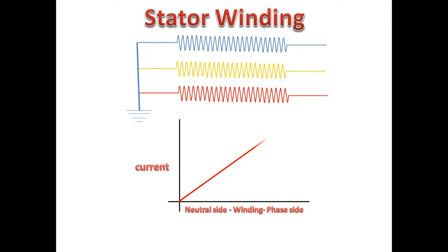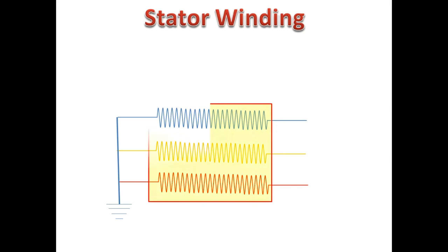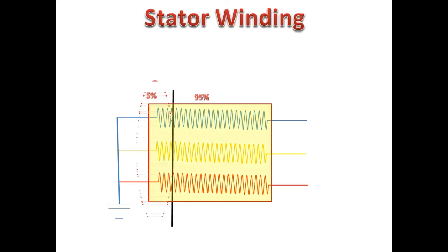According to all the above experiments, it is clear that the stator earth fault current depends on whether the fault is nearer to the phase side or nearer to the neutral side. If we consider 100% of the winding, according to our previous experiments only 95% of the winding is able to produce a detectable earth fault current. For this 95%, we can detect the earth fault current directly from the CT by the relay.